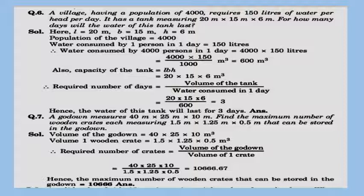A godown measures 40 m × 25 m × 10 m. Find the maximum number of wooden crates each measuring 1.5 m × 1.25 m × 0.5 m that can be stored in the godown. First calculate the volume of the godown, then the volume of one crate. Divide the godown volume by the crate volume — some terms cancel out — and the maximum number of wooden crates that can be stored is 16,666.